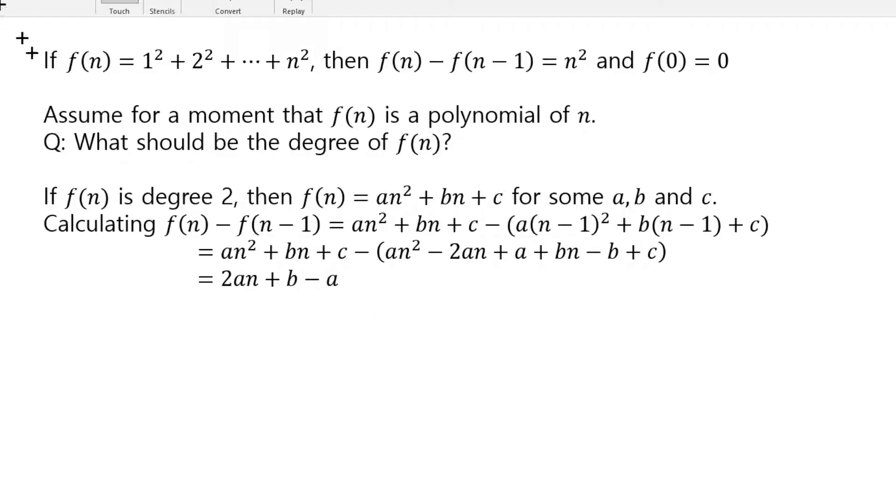and once you do that, you can see that some of the terms cancel. So you have an squared, an squared, bn, bn, and then c and c cancels, and the remaining survivors become this. But as you can see, unfortunately, there's no way to make this equal to n squared, because this is only order 1. So you can't make this equal to n squared.